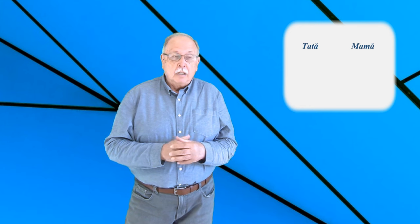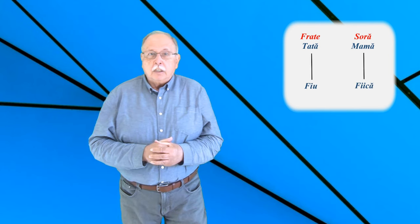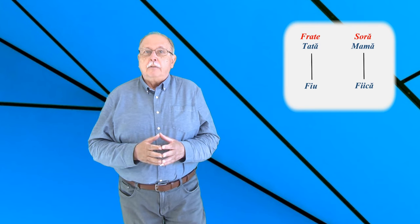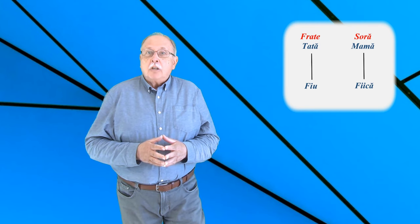Și asta ne face să știm că tatăl și mama din grup nu sunt soț și soție. Și asta înseamnă că ei pot să fie frate și soră. Și mai departe, e ușor. Cei doi trebuie să aibă unul un fiu, celălalt o fiică, nu are importanță cine are fiul și cine are fiica.